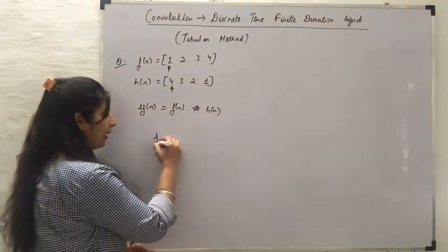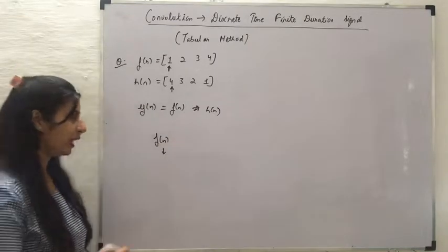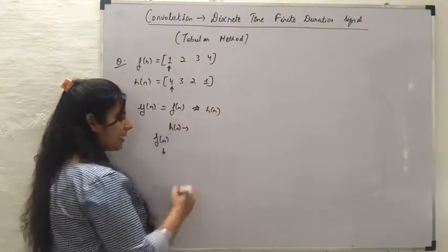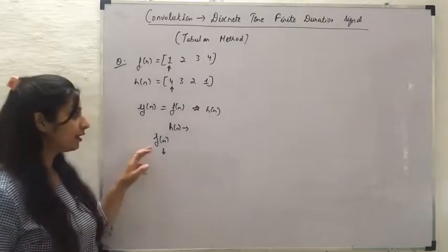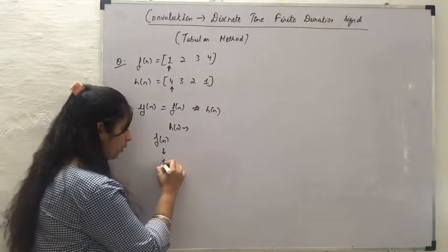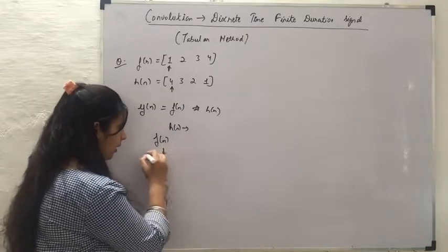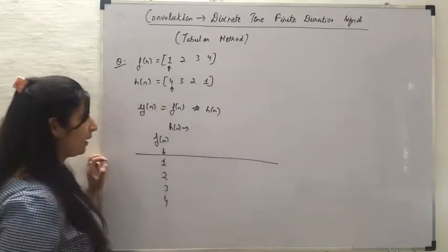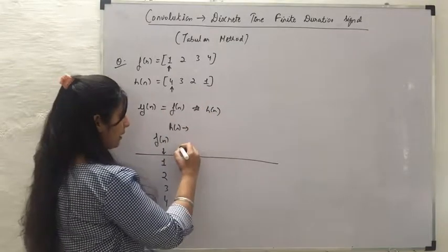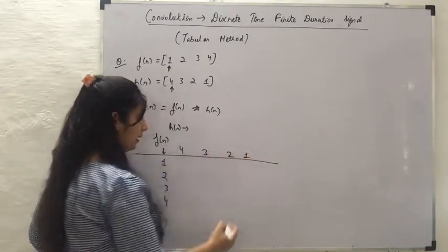When writing f of n, I am writing it in this direction, and when writing h of n, I am writing it in this direction. The values of f of n are 1, 2, 3, and 4, and the values of h of n are 4, 3, 2, 1. So I will write 4 here, 3 here, 2 here, and 1 here.